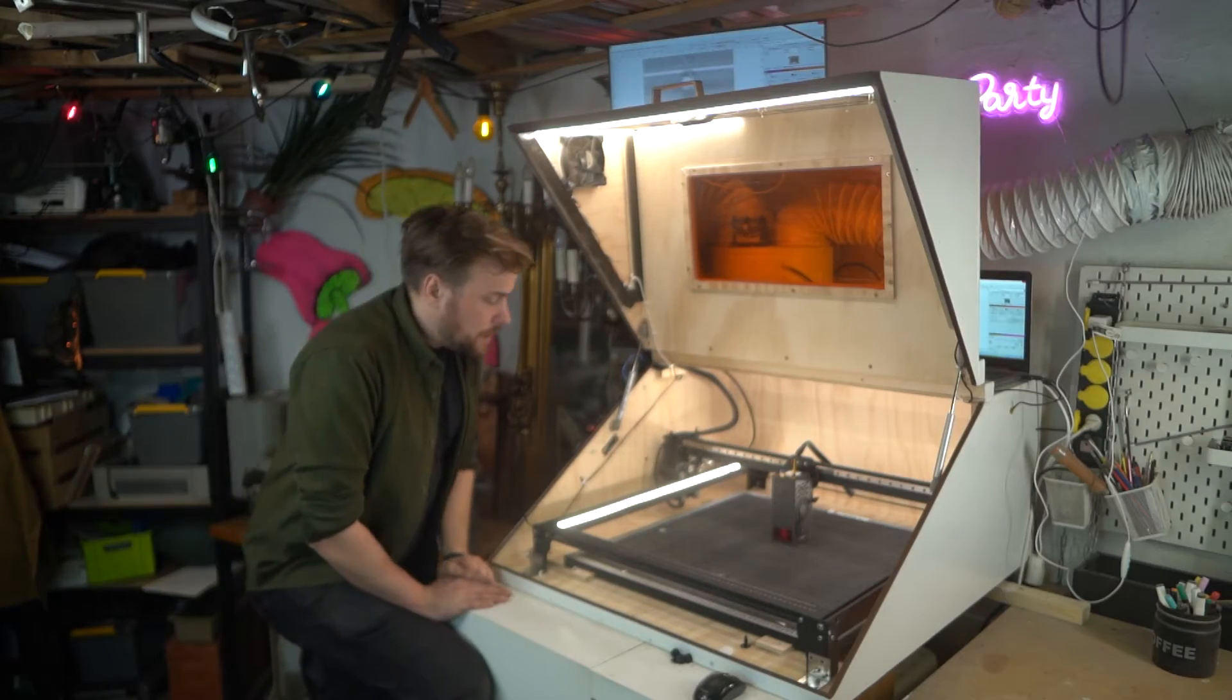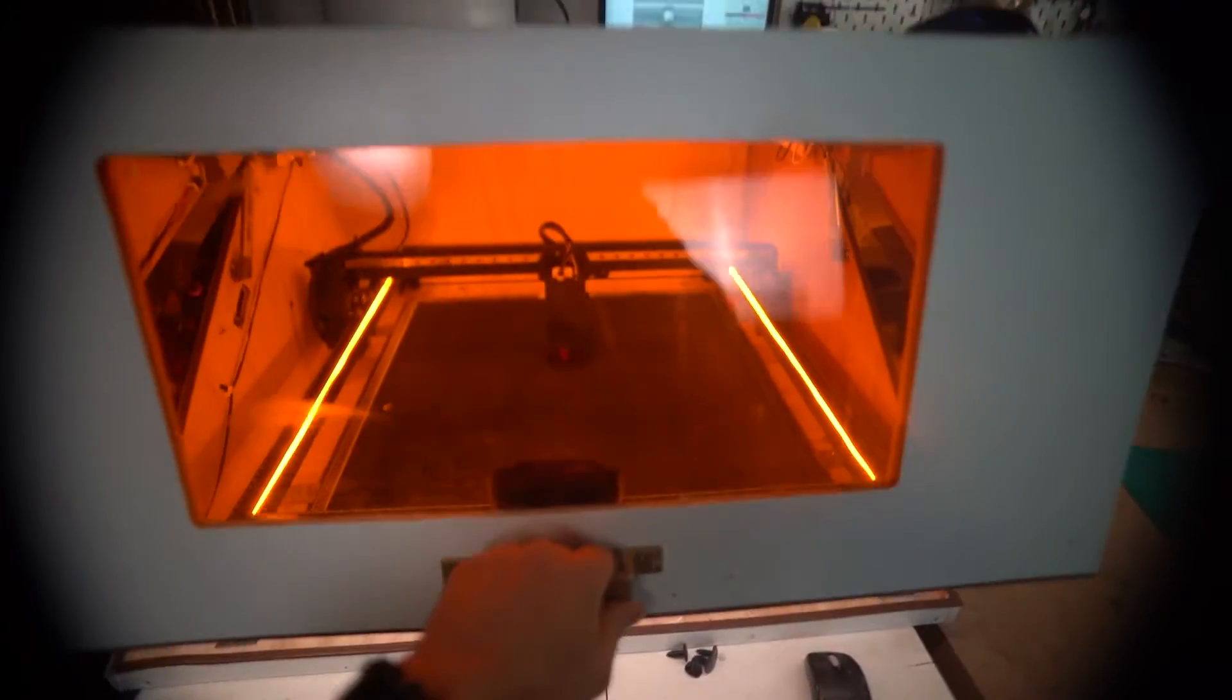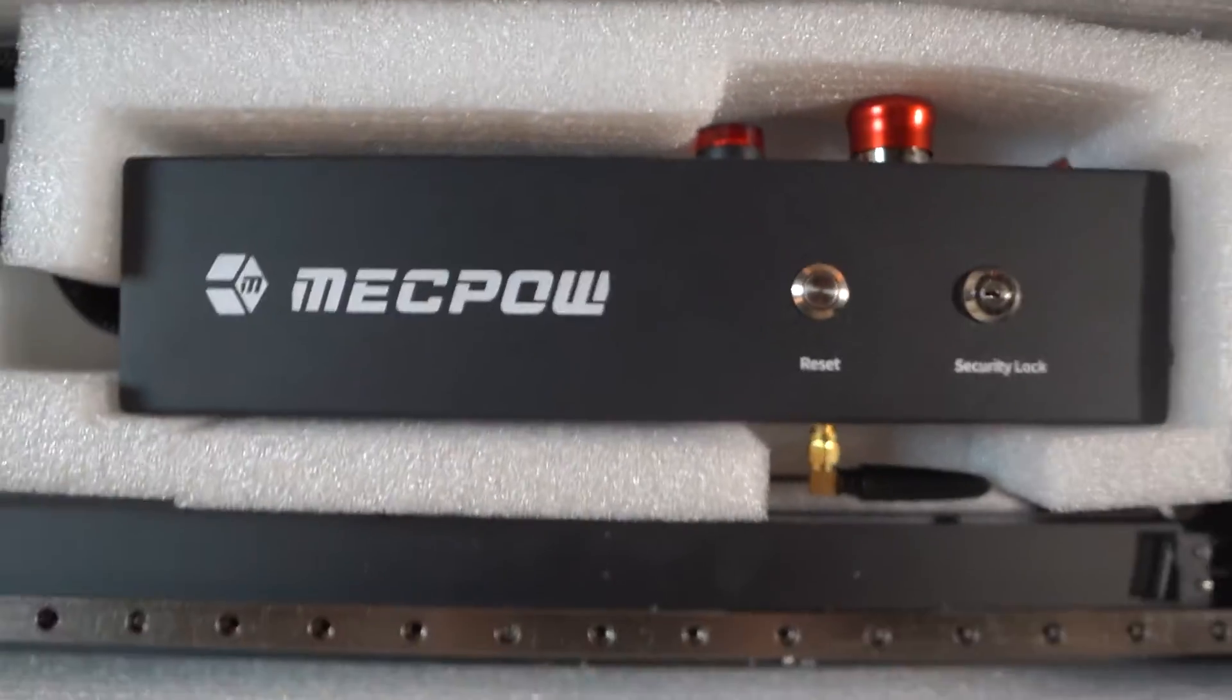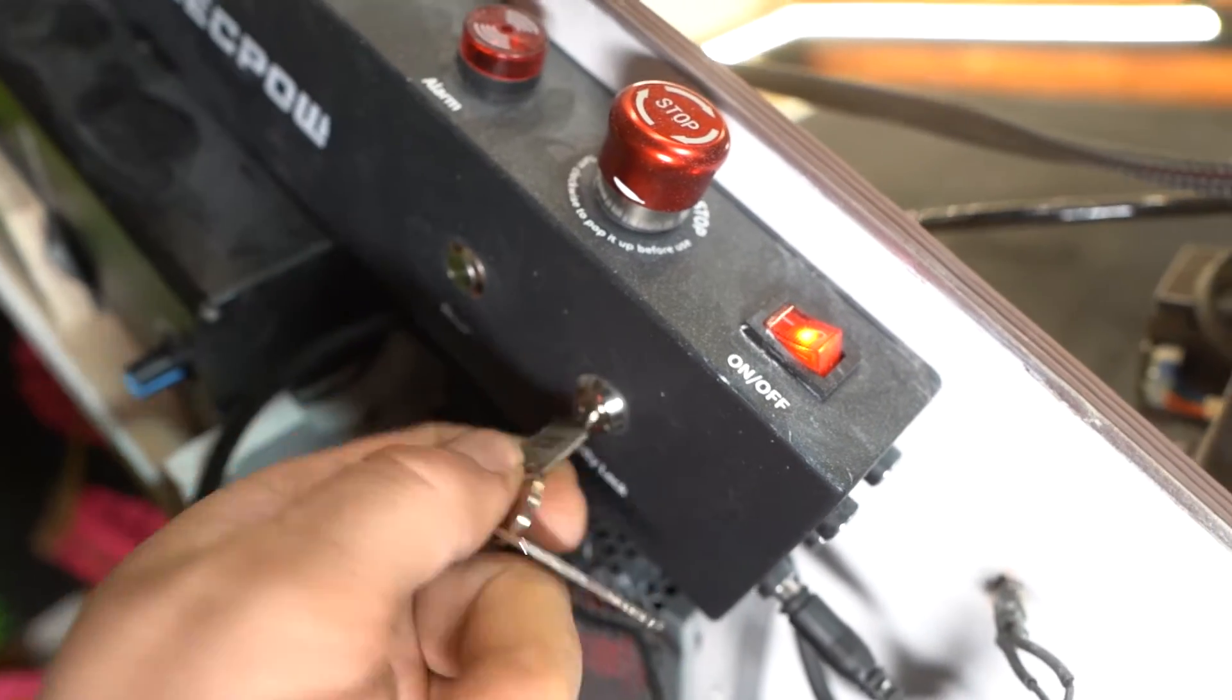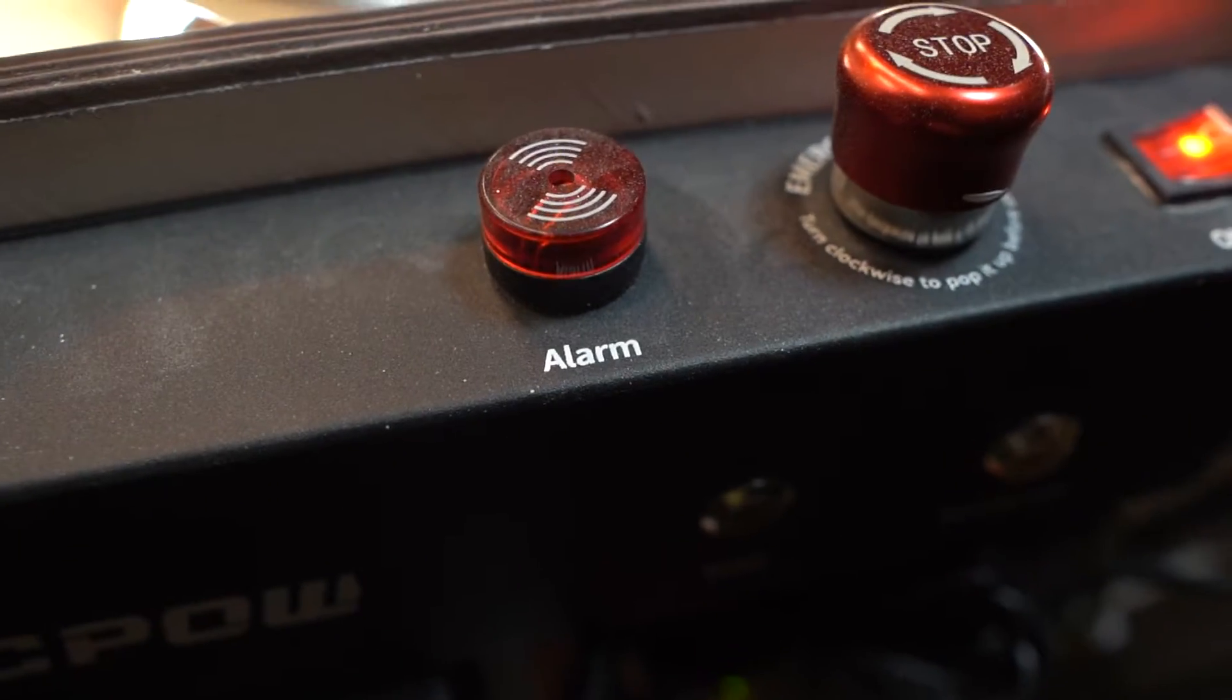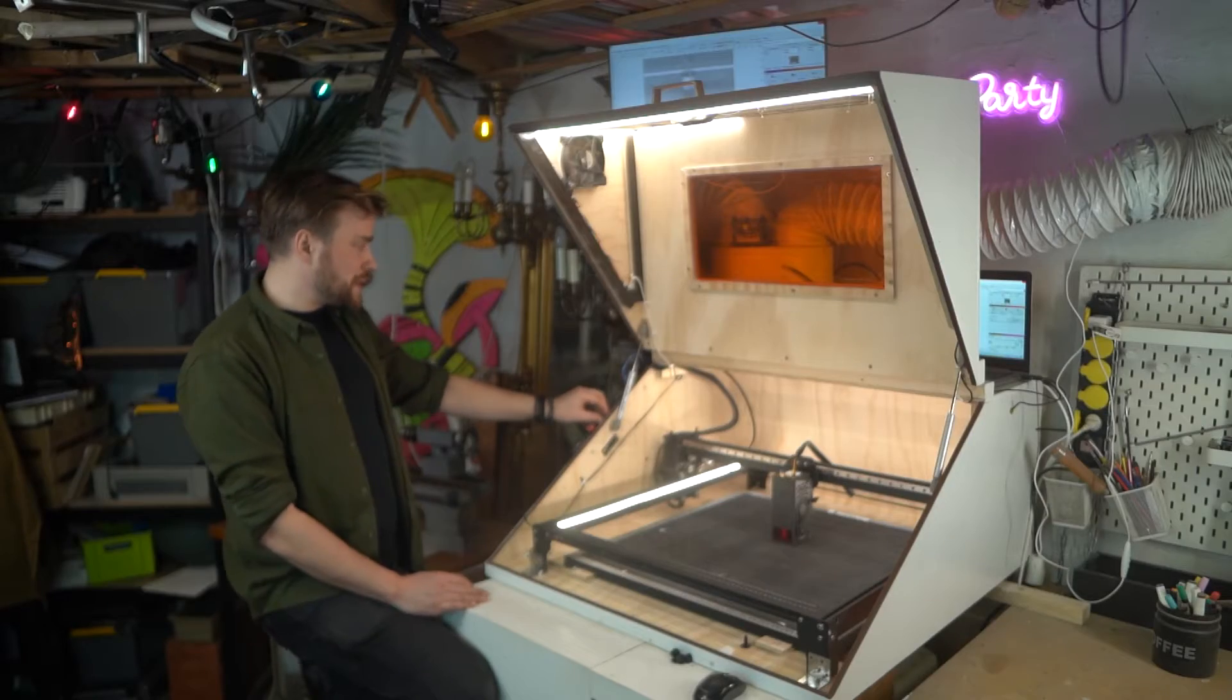The machine itself is a 22 watt diode laser with a 600 x 600 mm honeycomb bed. It has a nice control panel with a lock so you can turn off the controls. It has a stop button, flame detection and an alarm that goes along with that.